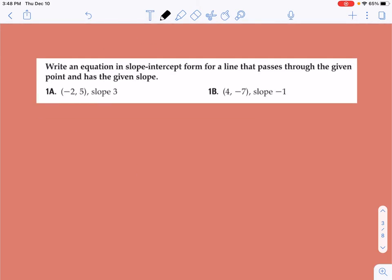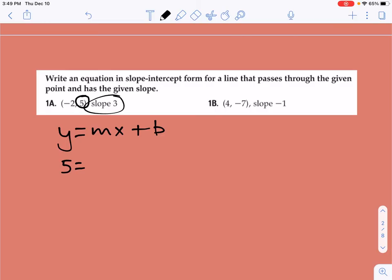It says write an equation in slope-intercept form for a line that passes through the given point and has the given slope. So we're doing what we did before. We're going to write this y equals mx plus b, but we're going to put in the information we know and then solve for b. So I know what y is because it's right here, it's 5. So let's use that point. m is my slope, that's 3. x is this number right here, negative 2, and then plus b.